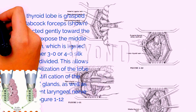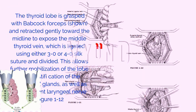The thyroid lobe is grasped with Babcock forceps and retracted gently toward the midline to expose the middle thyroid vein, which is ligated using either 3-0 or 4-0 silk suture and divided. This allows further mobilization of the lobe and identification of the parathyroid glands, as well as the recurrent laryngeal nerve, figure 1-12.